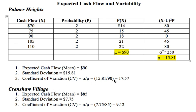For the Crenshaw Village, the expected cash flow was 85, the standard deviation was 7.75, and the coefficient of variation was 9.12. The third question was: which apartment complex had more risk? We can see that Palmer Heights had a coefficient of variation of 17.57 and Crenshaw Village had 9.12. Therefore, there is greater risk — greater uncertainty of receiving the expected cash flow of 90 — from Palmer Heights than from Crenshaw Village, because Crenshaw Village has the lower coefficient of variation, meaning less uncertainty and less risk.